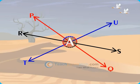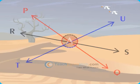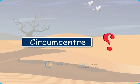Now let us see the different points of concurrence in a triangle. First, let us see what is circumcentre.